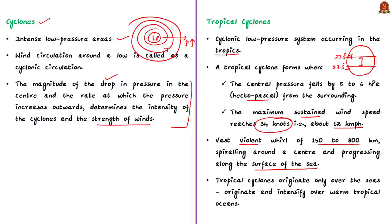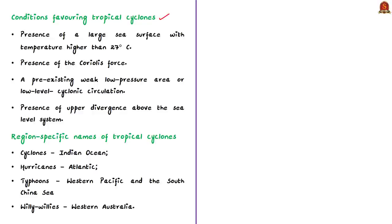A tropical cyclone is a vast violent whirl of 150 to 800 kilometers spiraling around the center and progressing along the surface of the sea at great speed. Tropical cyclones originate only over seas or oceans. Conditions favoring their formation include: sea surface temperature higher than 27 degrees centigrade, the Coriolis effect due to Earth's rotation, a pre-existing weak low pressure area, and upper divergence of the air column above the sea level system.